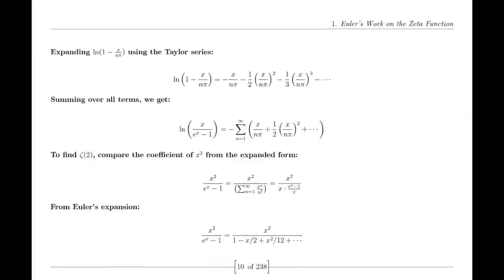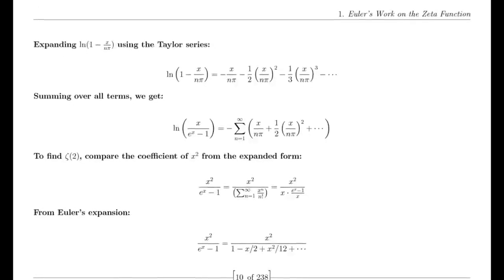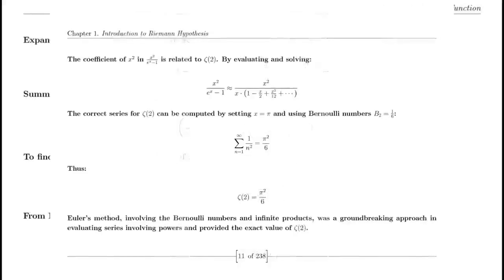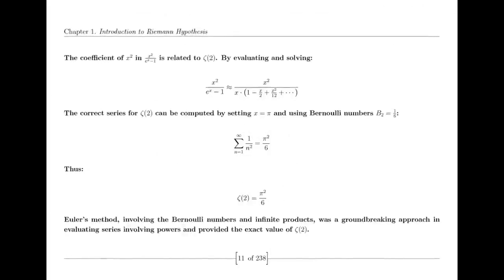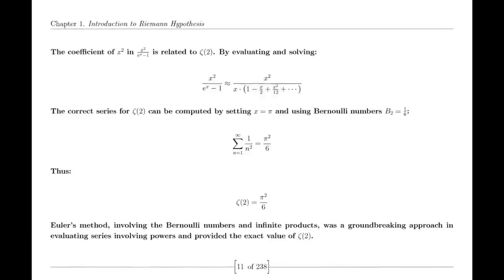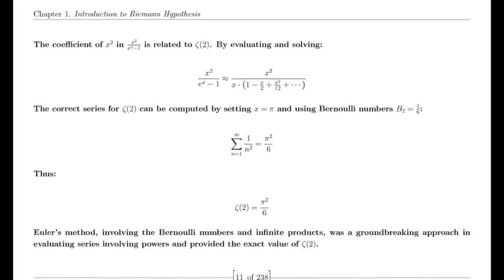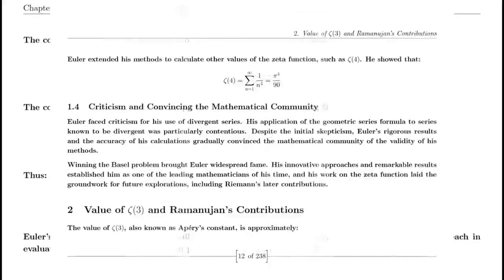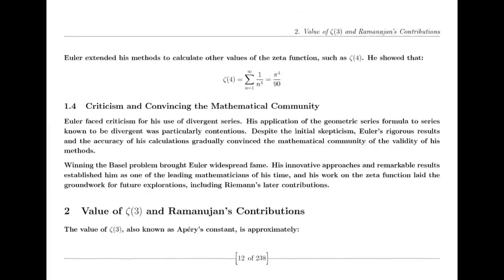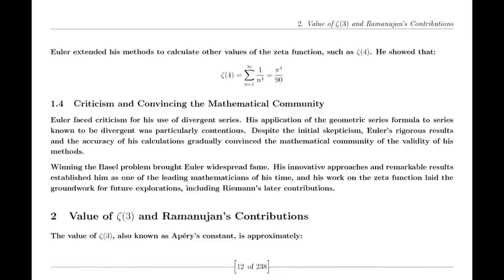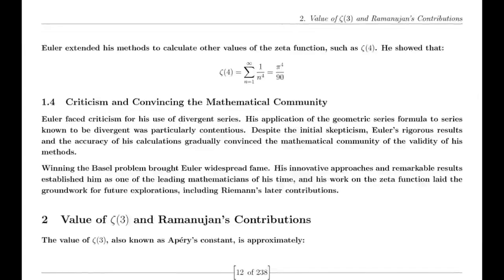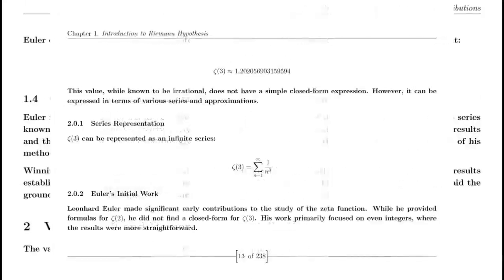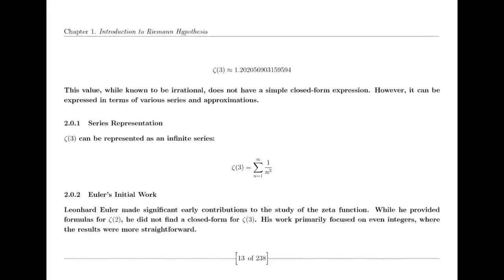The functional equation of the zeta function relates its values at s and 1−s through a complex expression involving π, the gamma function, and trigonometric functions. This equation is a key result in the theory of the zeta function, showcasing its symmetry and the deep relationships between different mathematical concepts.